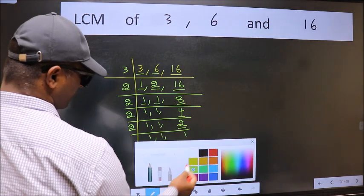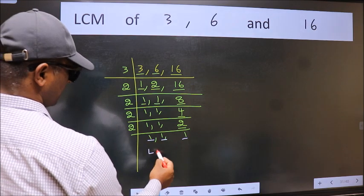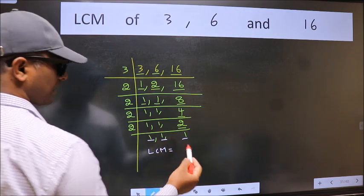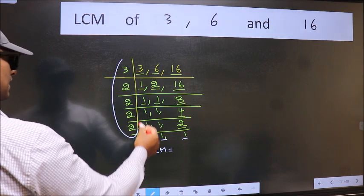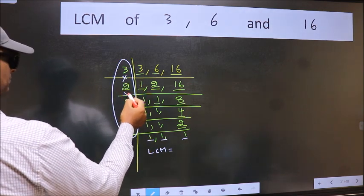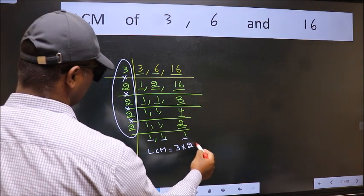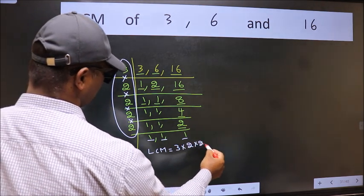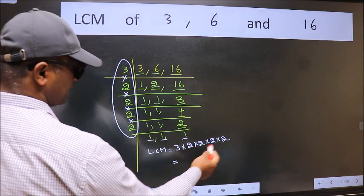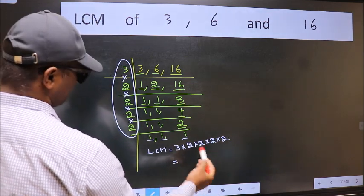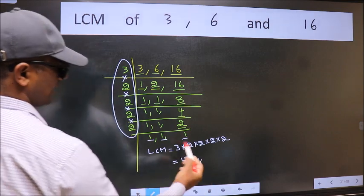So we got 1 in all 3 places. So our LCM is the product of these numbers. That is 3 times 2 times 2 times 2 times 2. When we multiply these numbers, we get 48. So 48 is our LCM.